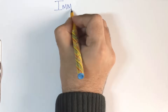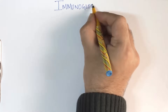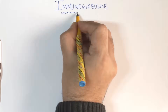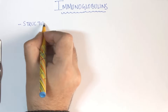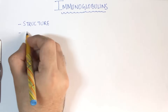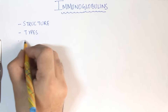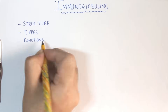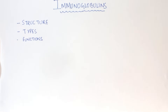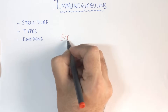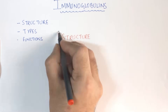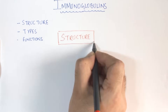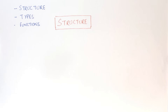In this video we will study the immunoglobulins. First we will talk about the structure of the immunoglobulins, and then we will discuss the types and functions of the immunoglobulins. Let's first talk about the structure of the immunoglobulins or the antibodies.